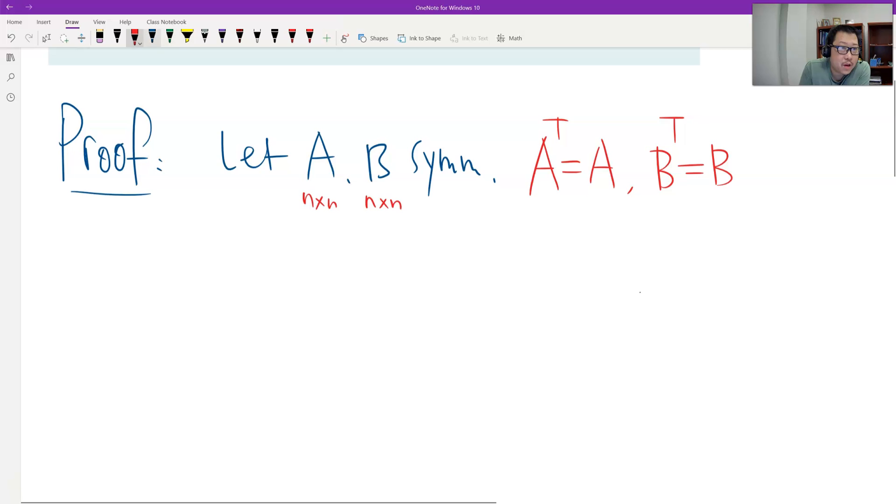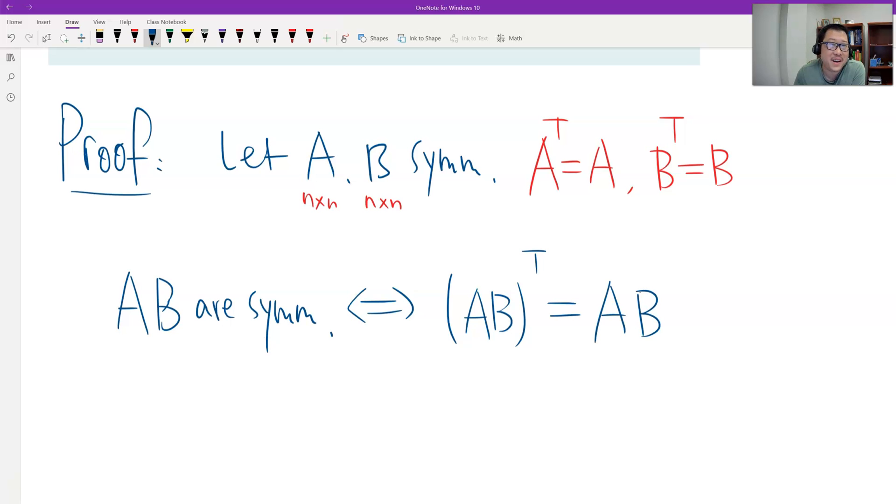So what is A times B are symmetric. And it is equivalent by the definition. A times B, I see A times B as a bigger matrix. Therefore, we have to see AB transpose equals A times B itself. That's the definition.